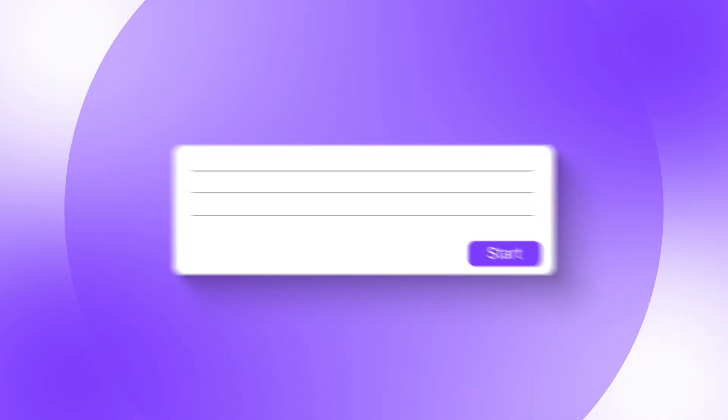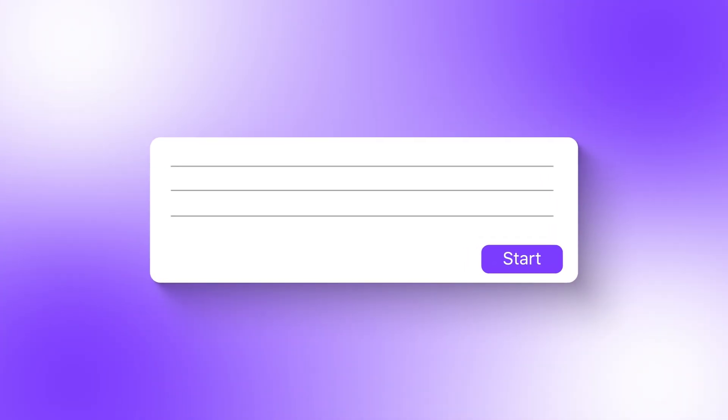But before we generate anything, we're going to take a look at the exact prompt that powers this entire build. This is the single instruction that tells Jenny.ai to produce every section of a complete academic research proposal.